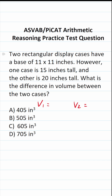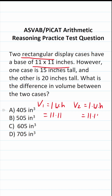We're finding the volume of rectangular prisms. That formula is length times width times height, and that's going to be the same for both of these. We know the base of both display cases is 11 by 11. So this is going to be 11 times 11 for both. To find the volume of the first one, we multiply by its height of 15. To find the volume of the second one, we multiply by its height of 20.